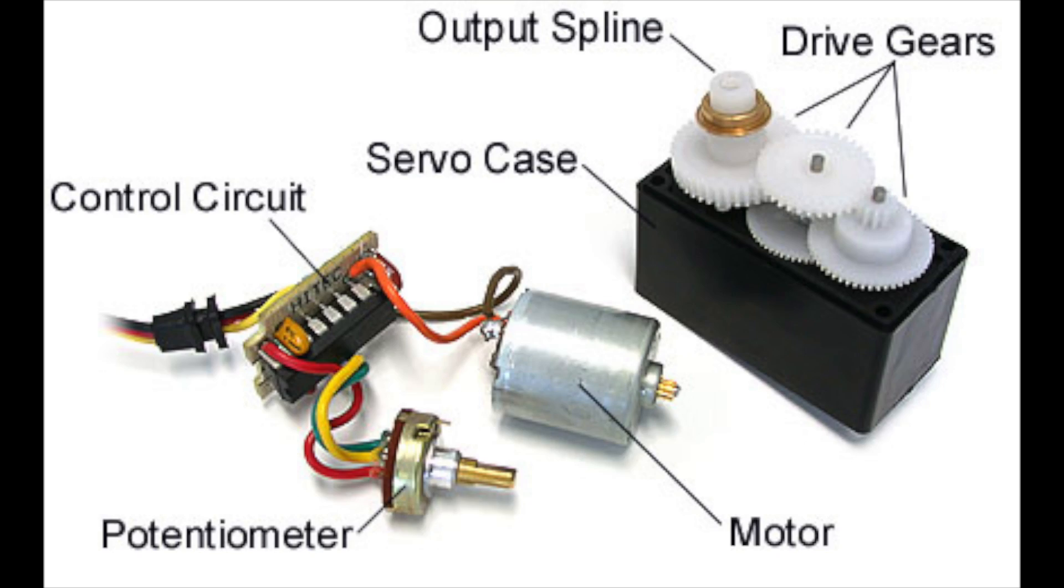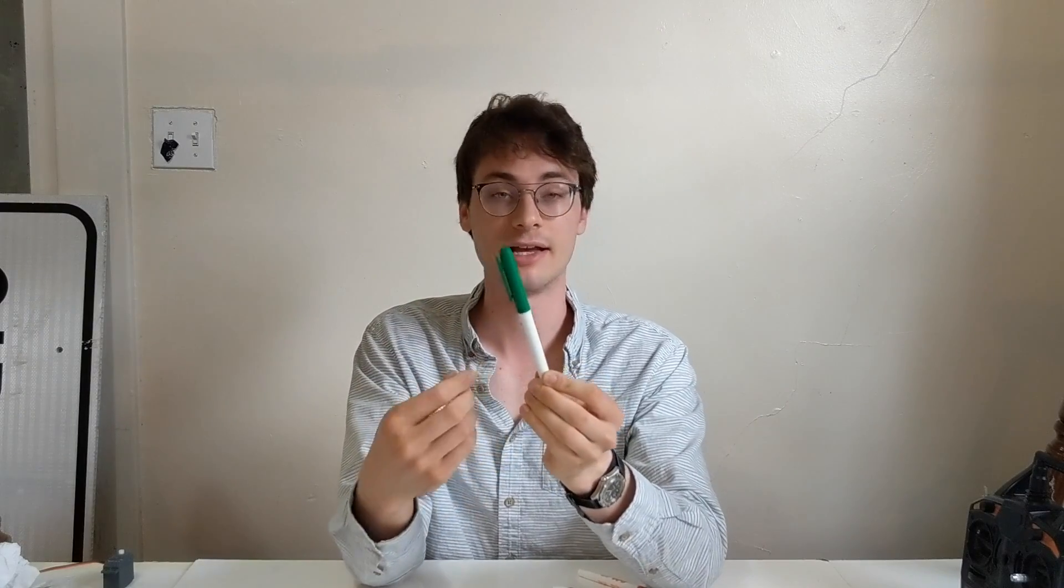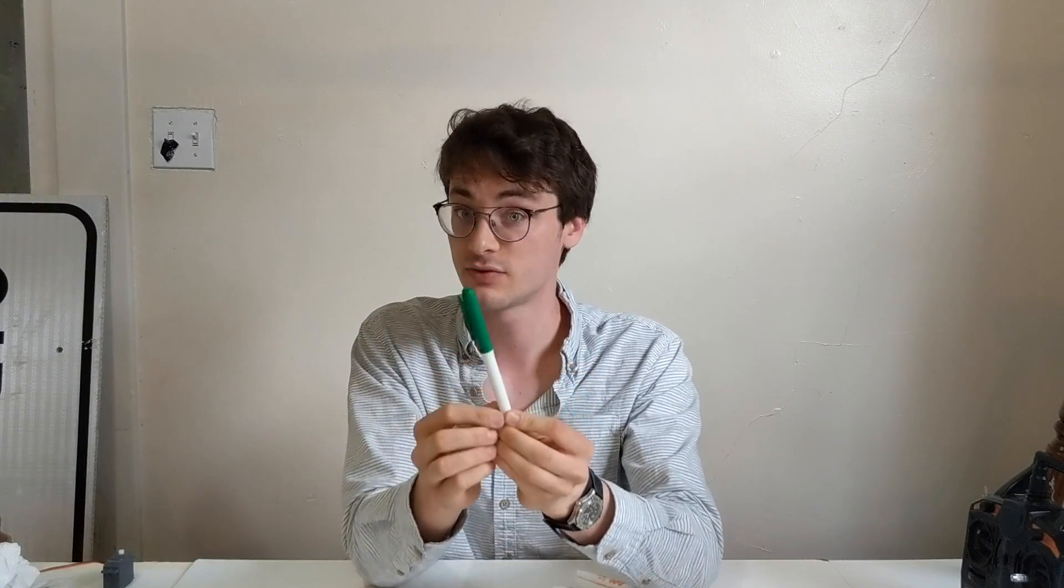Now you can either purchase these or you can build your own using modified regular servos. So a regular servo has what's called a potentiometer in it and if the servo is commanded to go to say 50 degrees, that potentiometer tells the servo its position. It'll be, hey, you've reached 50 degrees, you can stop moving now. Modifying a servo for continuous rotation typically involves removing that potentiometer.